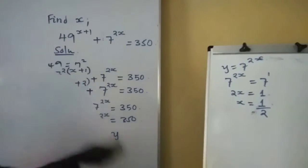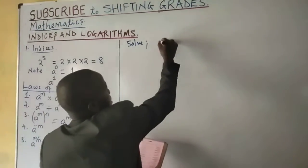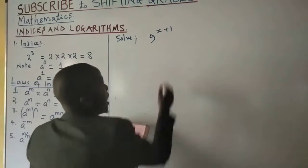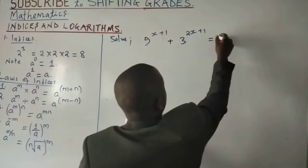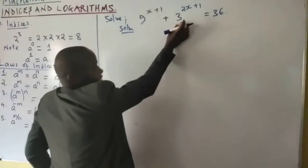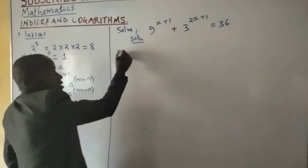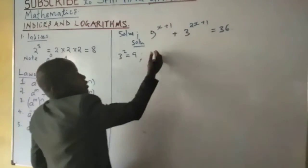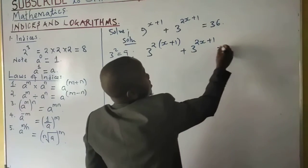Another example: solve the equation 9^(x+1) + 3^(2x+1) = 36. The least base is 3. Since 9 = 3², we express 9^(x+1) as (3²)^(x+1) = 3^(2x+2). So the equation becomes 3^(2x+2) + 3^(2x+1) = 36.